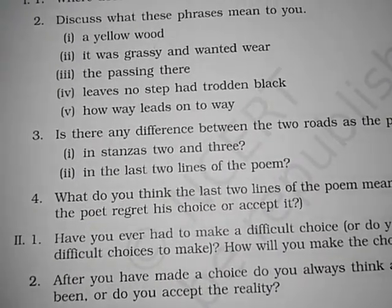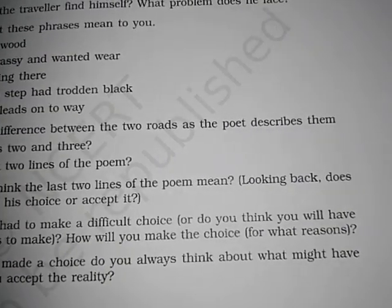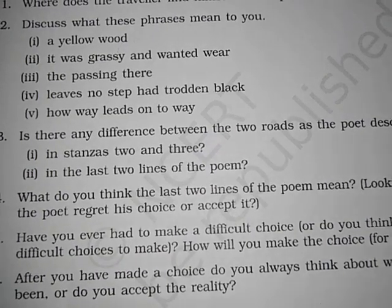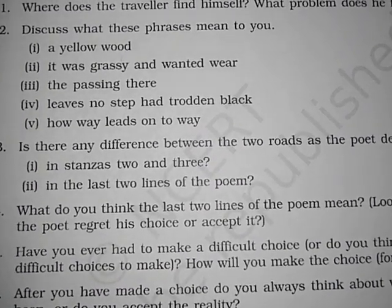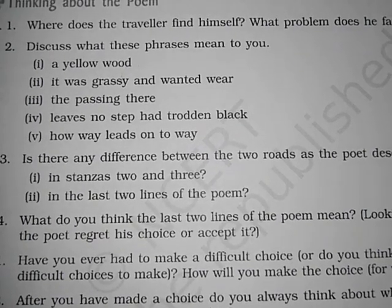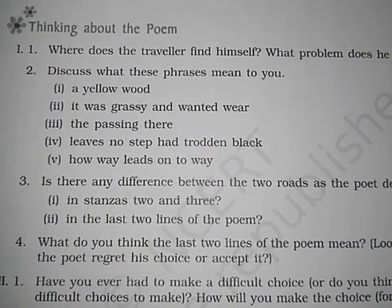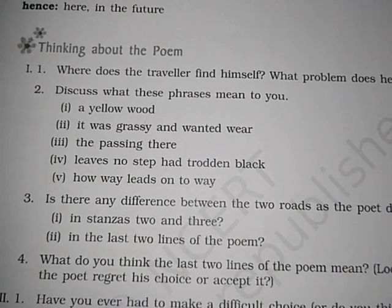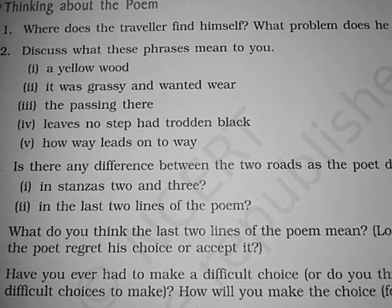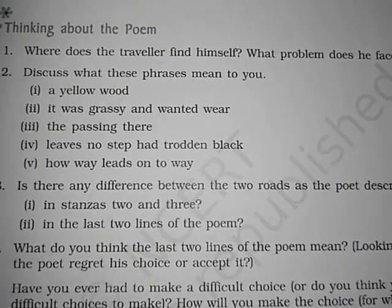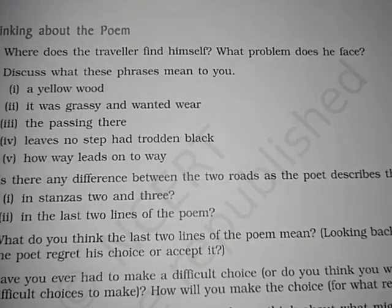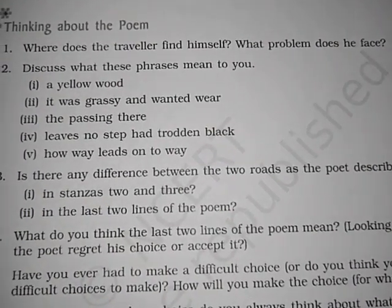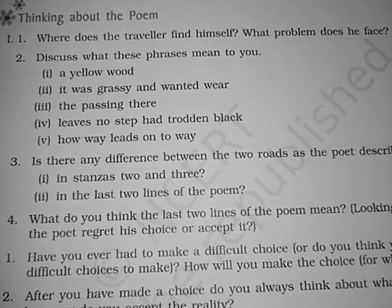Third question: is there any difference between the two roads as per the poet? In stanzas 2 and 3, the poet mentions the physical aspects of both roads — one is a well-furnished and clean road, and the other is a less-traveled road. In the last two lines of the poem, the poet decides he should prefer the road less traveled by, rather than the road most traveled by.